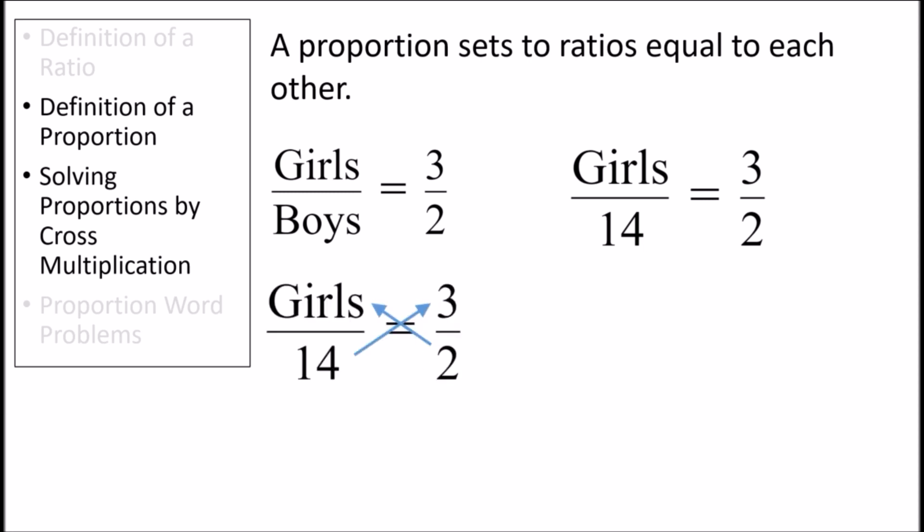In cross multiplication, we multiply each denominator to the other side. Doing it here, we'll multiply the variable girls by 2 and then multiply 3 by 14. This gives us that 2 times the number of girls is equal to 3 times 14. We can then solve for the number of girls by dividing both sides of this equation by 2. Doing so will give us that the number of girls in the classroom is 21.